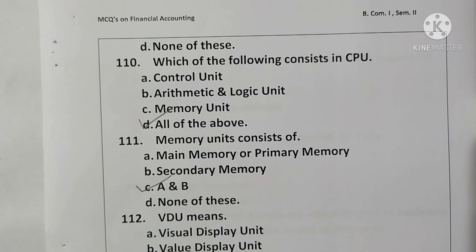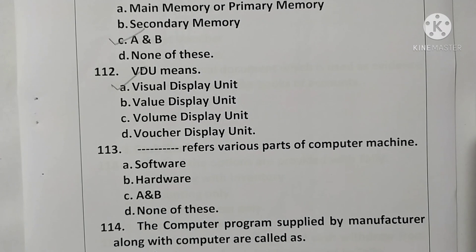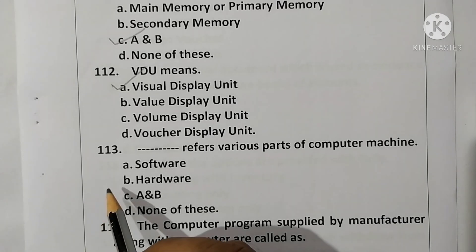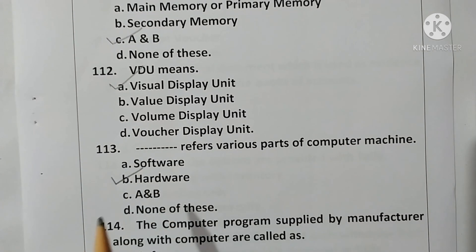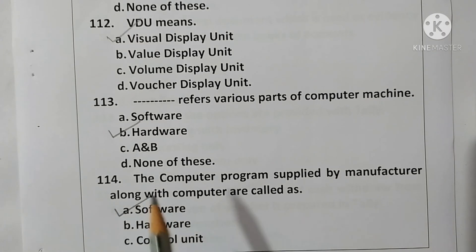Question 112: VDU means Visual Display Unit. Option A is correct. Question 113: Hardware refers to the various physical parts of a computer machine. Option B is correct. Question 114: The computer programs supplied by the manufacturer along with the computer are called software. Option A is correct.